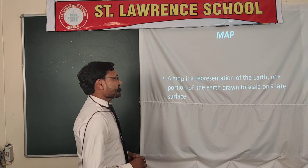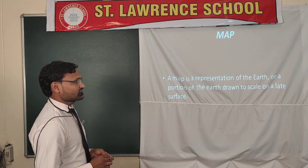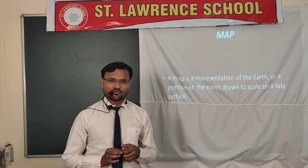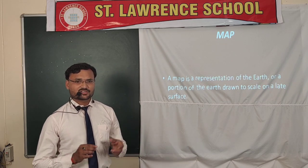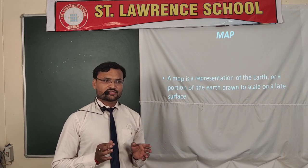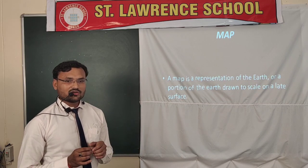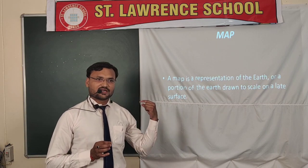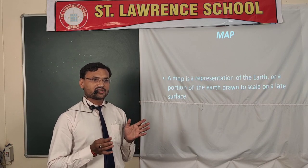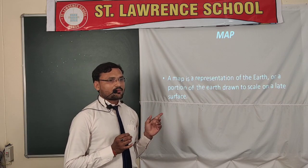The next topic is the map. A map is a representation of the Earth or a portion of the Earth drawn to a scale on a flat surface. As I mentioned, with the globe it is not possible to see all the continents and oceans all together. To reduce that problem, we take a flat surface and draw either the full part of the Earth or separate portions like a continent or country on that map. That is called a map.